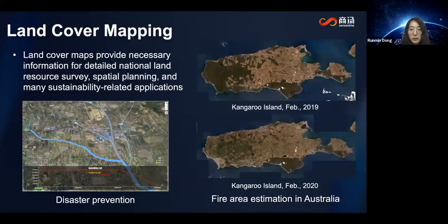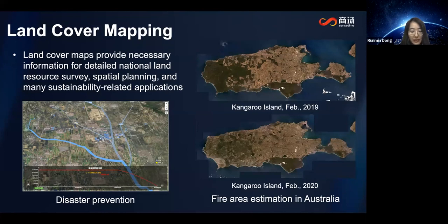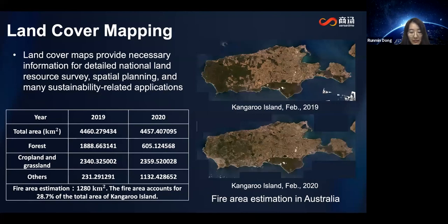First, we shall start with a broad scenario: land cover mapping. Land cover mapping is a basic process to categorize and describe the surface on Earth. It provides fundamental data for various management and research applications such as food production, transportation, forecast, urban planning, flood control, disaster prevention, and other earth system studies. At the beginning of this year, we used a land cover mapping algorithm to estimate the fire area in Australia. Comparing the mapping results before and after the fire, we can see the fire area accounts for 28.7% of the total area of Kangaroo Island. Land cover mapping products play an important role in sustainability-related applications.